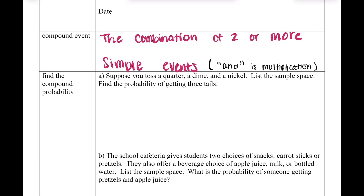So we're going to find the probability first. The first coin is a quarter, and we want tails every single time. The probability of getting tails with a quarter is one-half, because there's only one tails side and two sides total. Then we multiply — because we're looking at all these events at the same time — by the dime, which is also one-half, and then the nickel, also one-half. One-half times one-half times one-half gives us one-eighth.